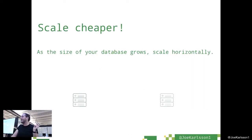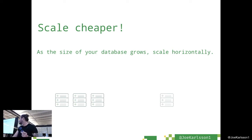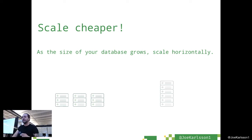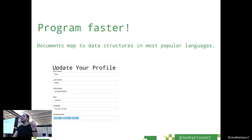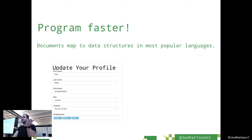MongoDB scales differently than traditional relational databases. MongoDB scales horizontally via sharding — you can split your data across different servers instead of buying bigger and bigger ones. MongoDB is a NoSQL document data store, which means you can save data in the data types you're used to from JavaScript — objects, dictionaries, hash maps — as opposed to traditional rows and columns.